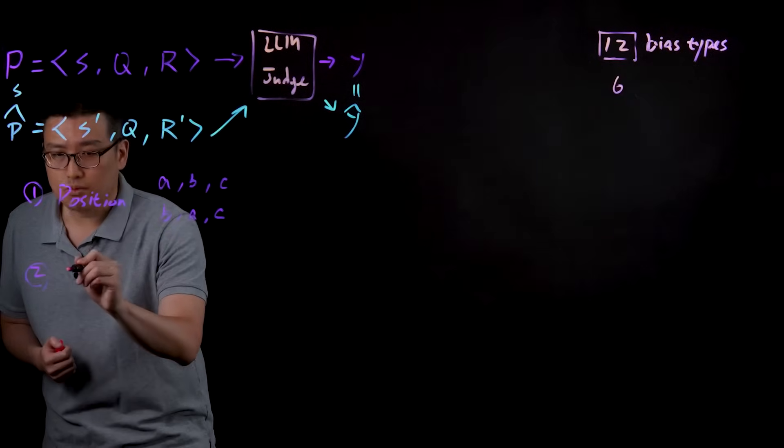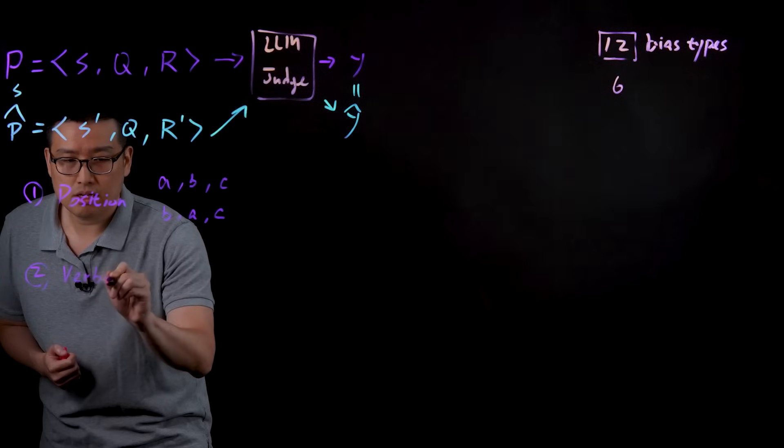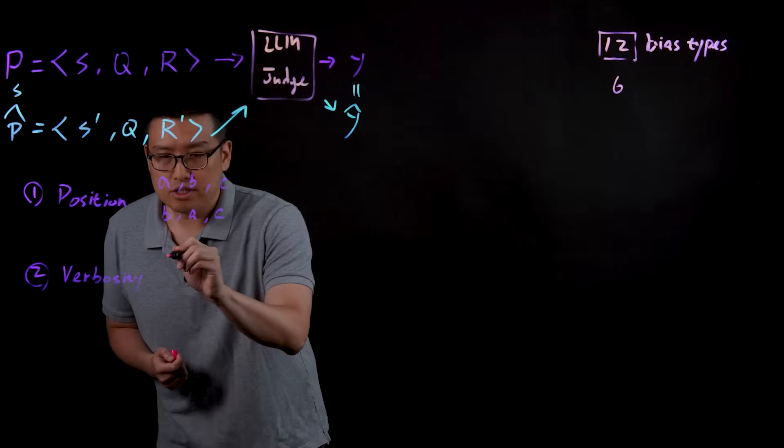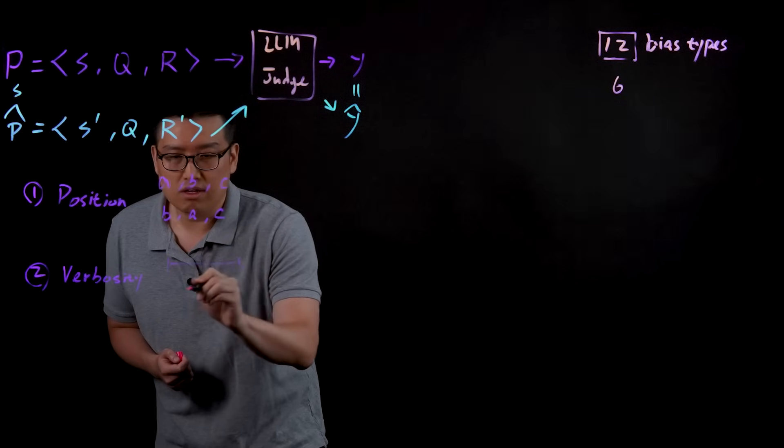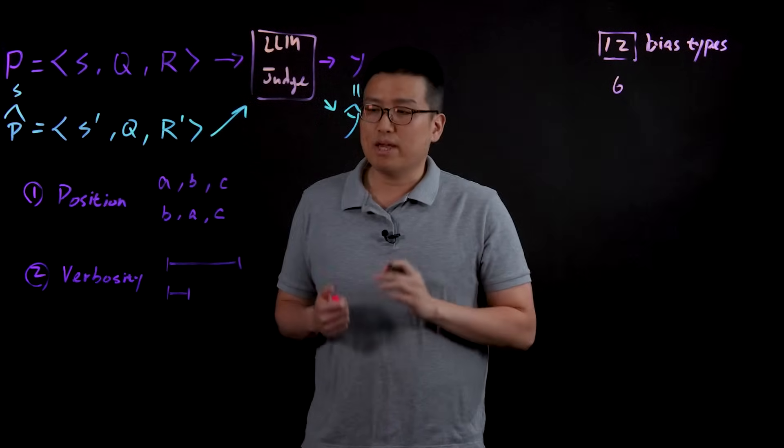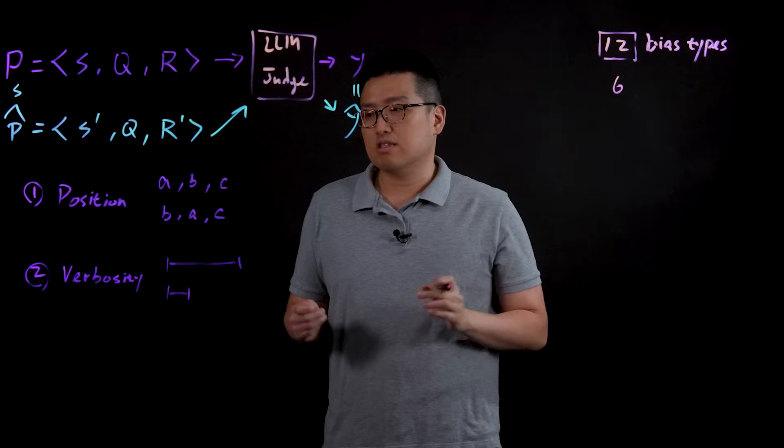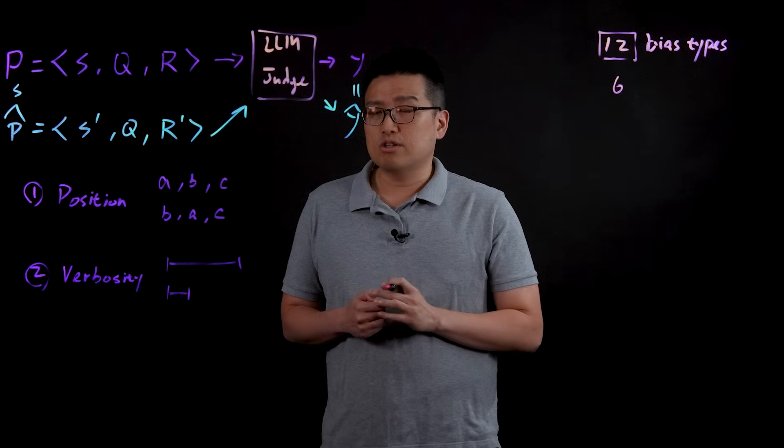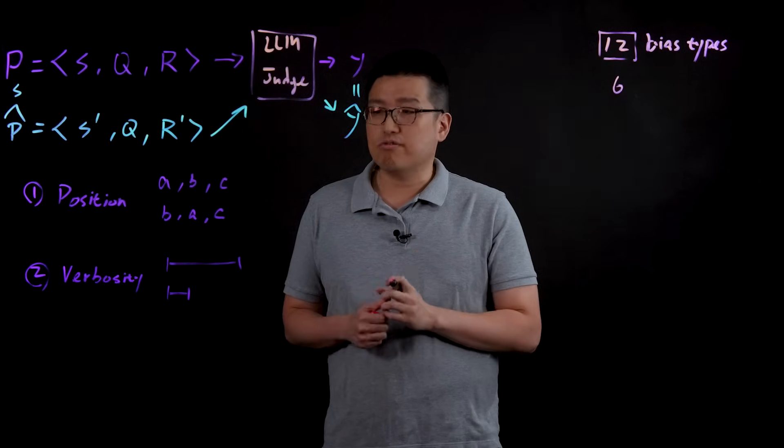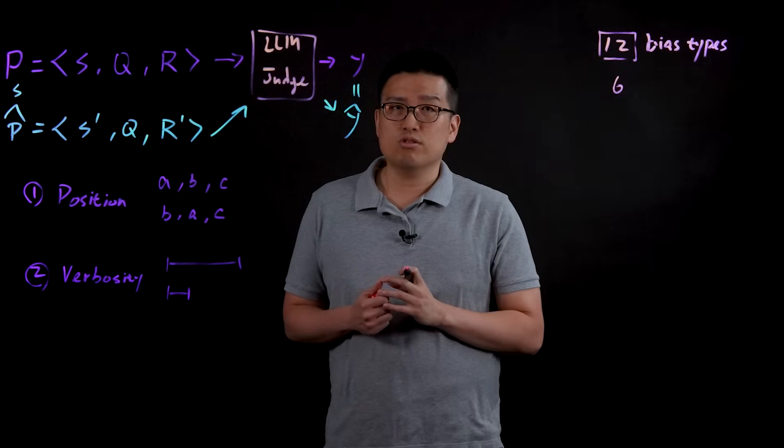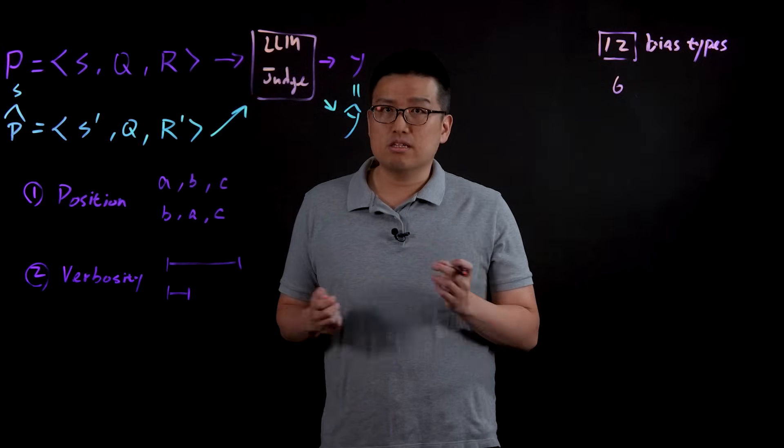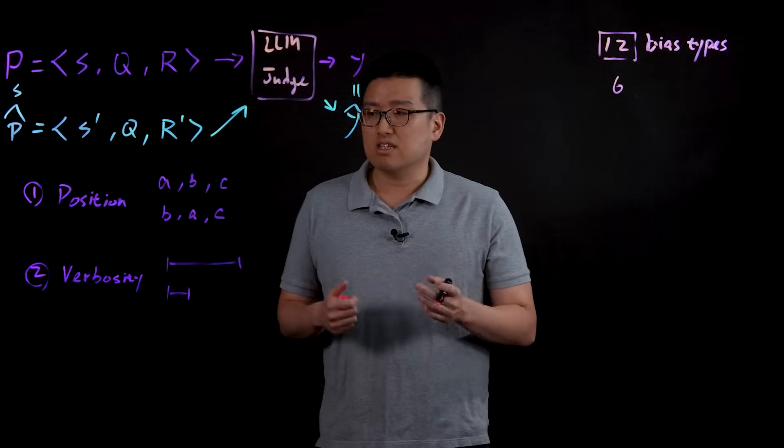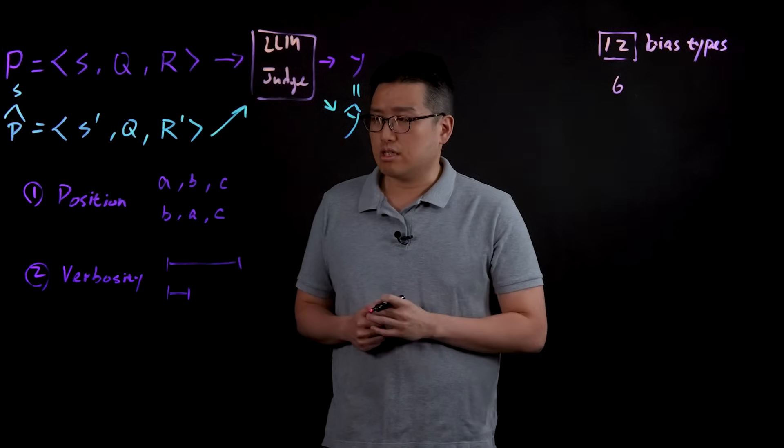The second one is what we called verbosity. In this case, we particularly make some response longer and some response shorter, but we also make sure the responses deliver the same message. In this case, we find divergent output in the sense that some judges prefer longer contexts, some judges prefer shorter contexts, but either of these cases are ideal. In the ideal case, the judges should be consistent about the prediction as long as the context is correct.